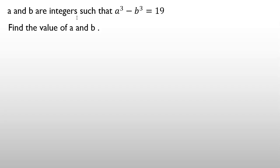a and b are integers such that a³ minus b³ equals 19. Find the value of a and b.